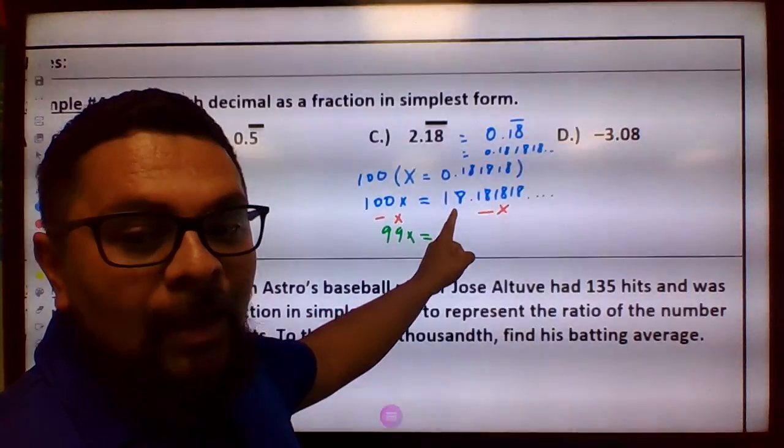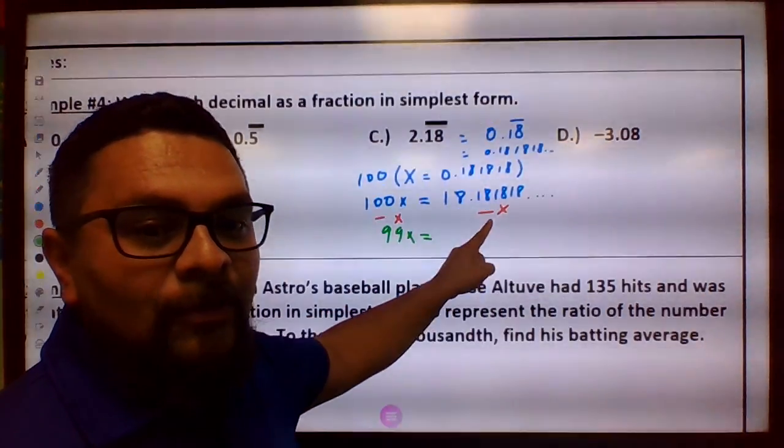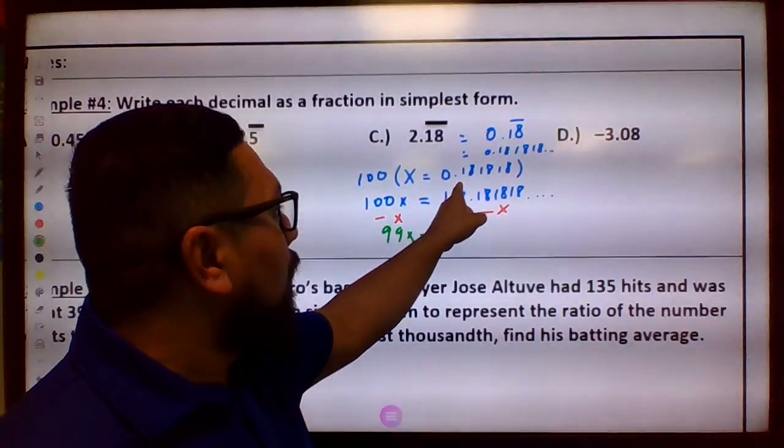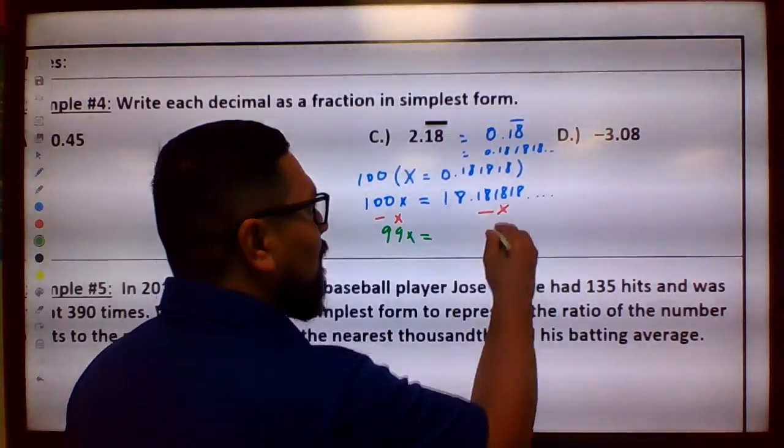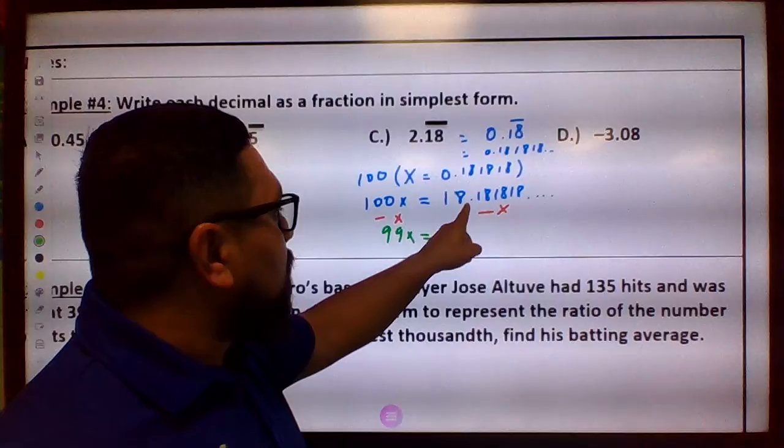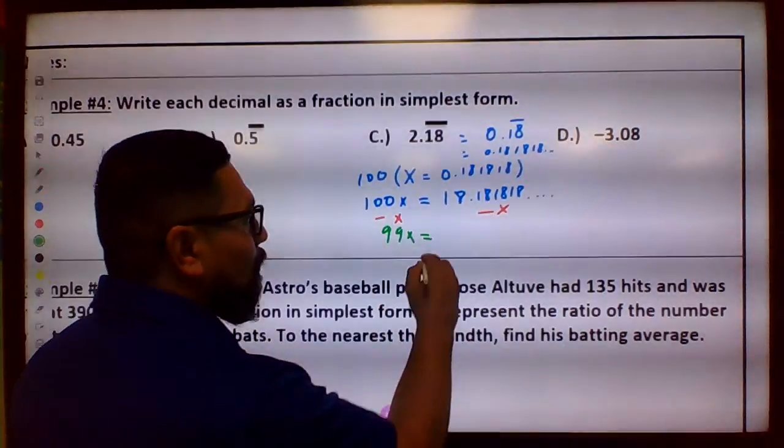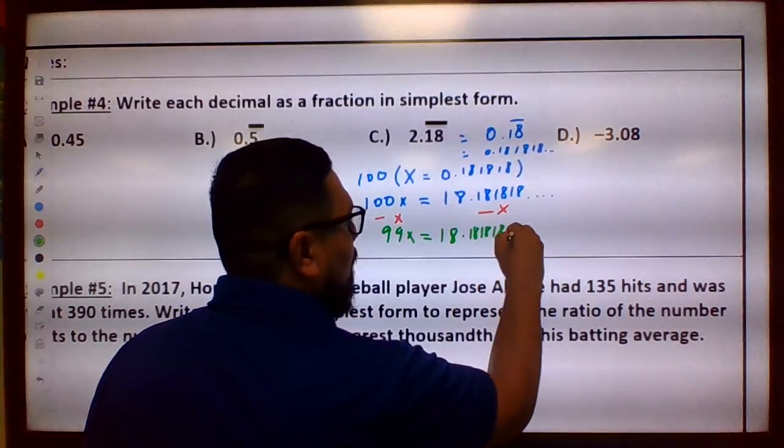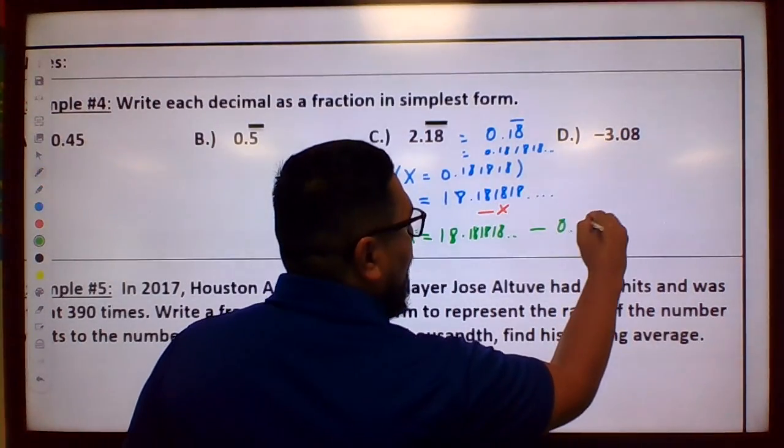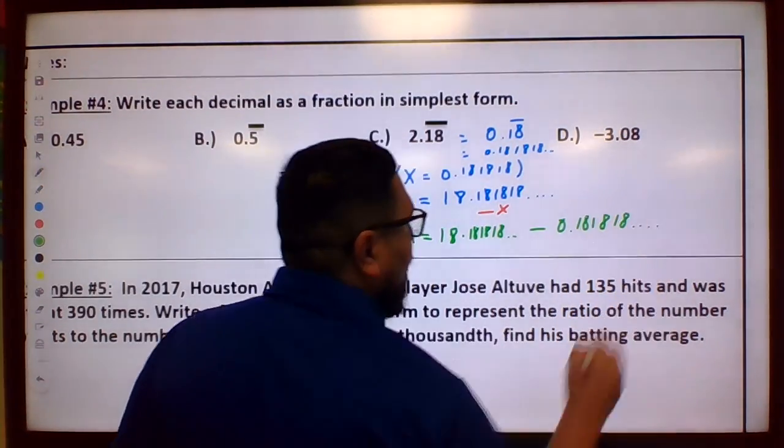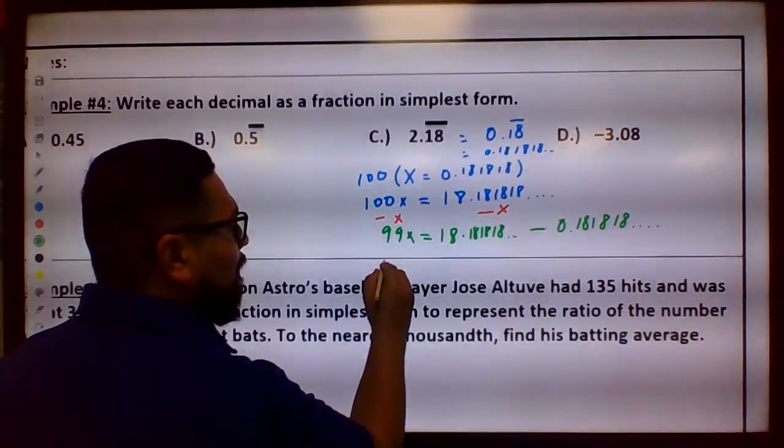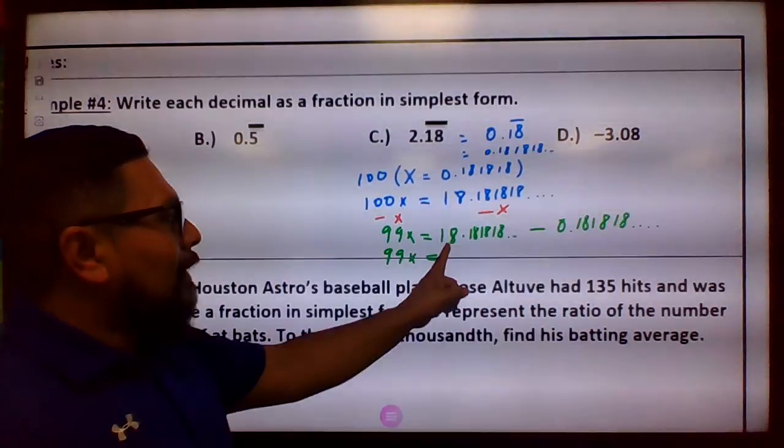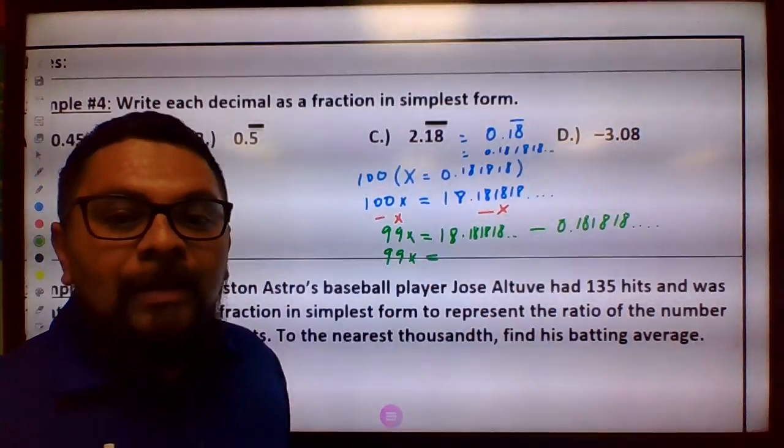When you have 18.181818 minus X, remember what is X? X is this right here. X equals 0.181818, right? So you're subtracting this from that. So your answer is going to be 18. 18.181818 minus 0.181818. When you do that, that simplifies into 99X equals this minus this. If you put it in a calculator, it's just 18.